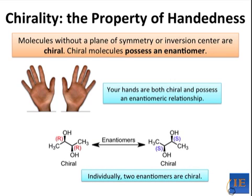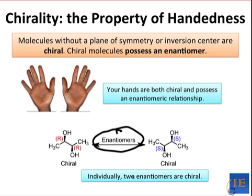Here's an example of two molecules that are enantiomers of one another — it's the example we've been looking at throughout this series of videos. We can say that as a relationship, the two molecules are enantiomers of one another. They're mirror images, and they're non-superimposable. But individually, the fact that each molecule possesses an enantiomer is a sign that the two molecules are chiral.